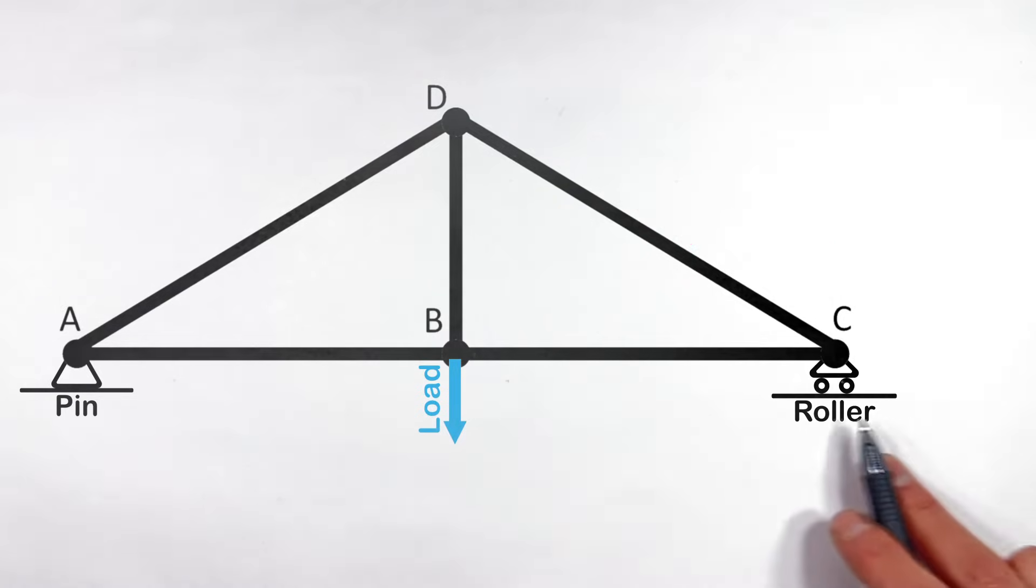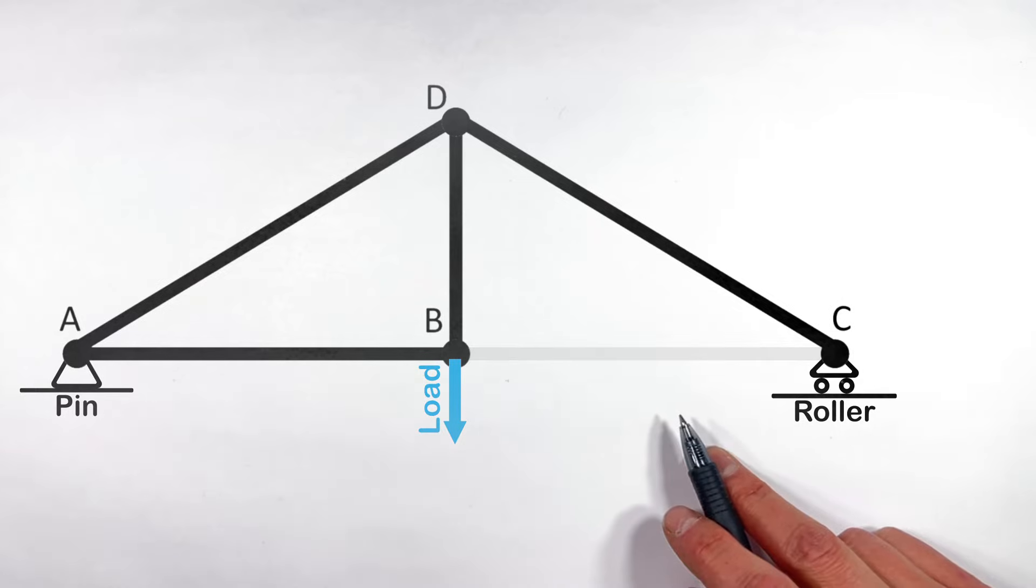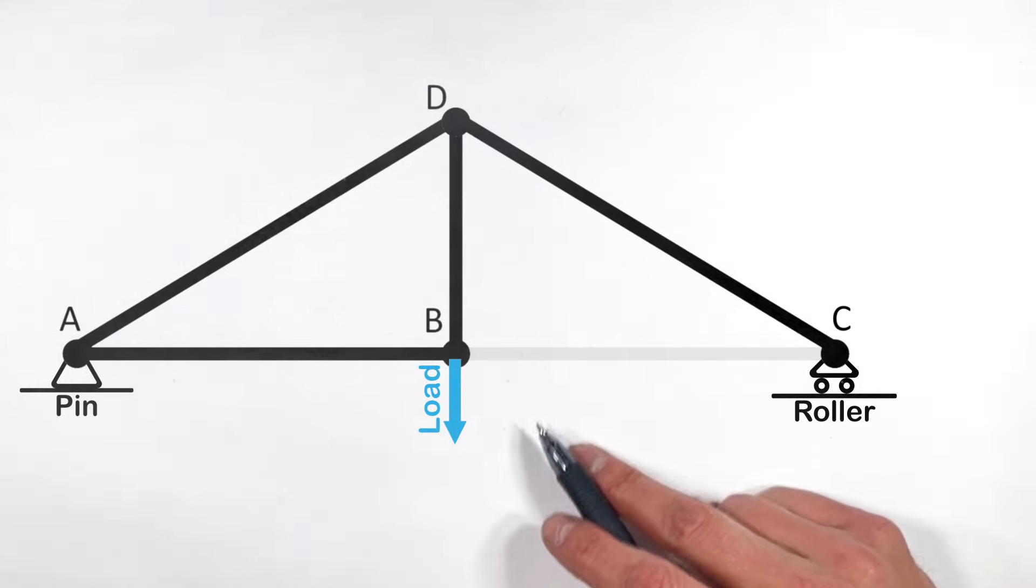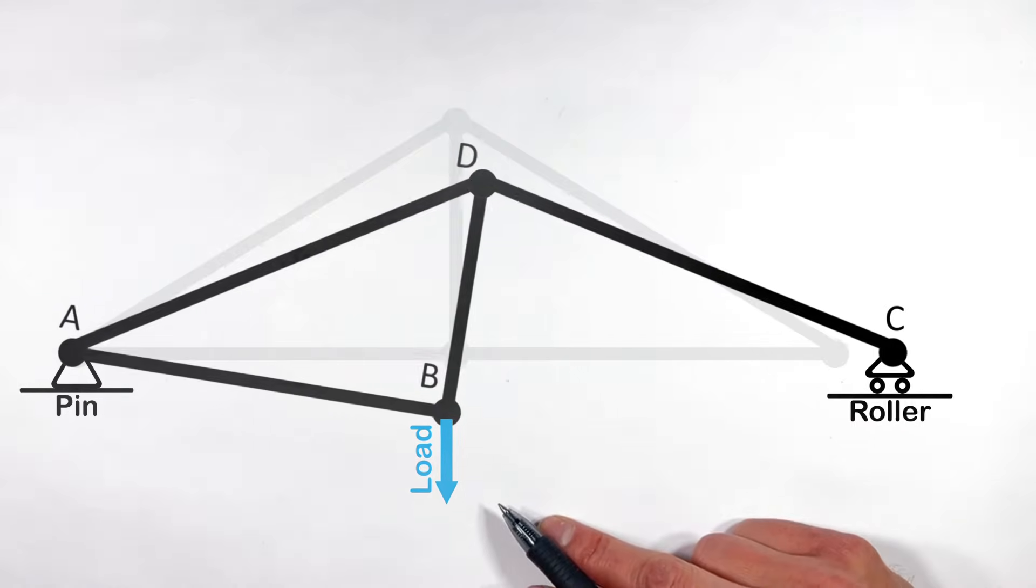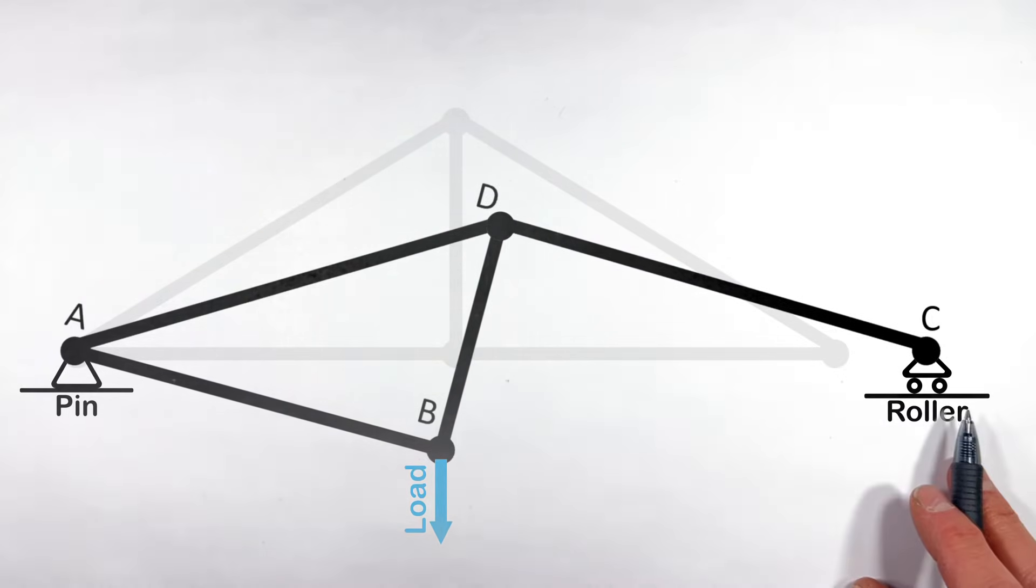Now conversely, if we look at this member right here, CB, if we were to remove this beam right here, the left half of this truss is going to rotate downward because the load is pulling downward on it. And this joint C is going to get pushed outward here by this other member.